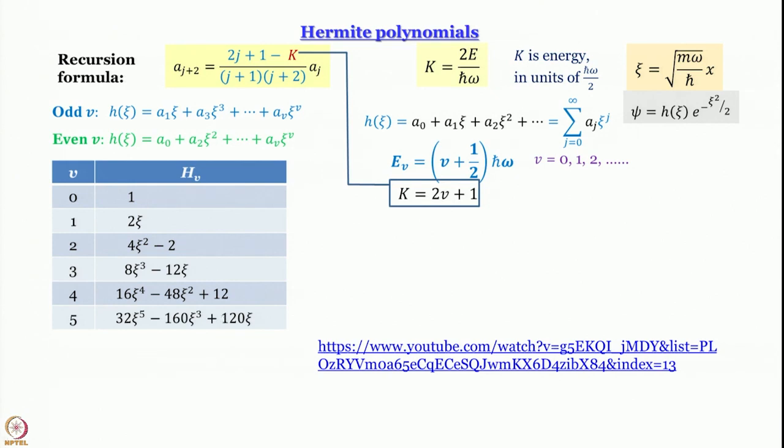These are the Hermite polynomials. How do you find the wave function? By multiplying each Hermite polynomial by this common Gaussian function e to the power minus psi square by 2.